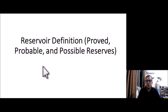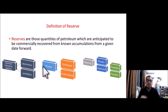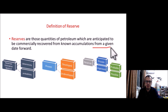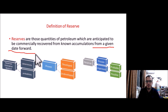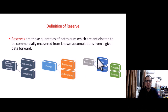Reservoir definition — what is the reservoir definition, and what are the proved, probable, and possible reserves? The international definition: reserves are those quantities of petroleum which are anticipated to be commercially recovered from a known accumulation from a given date forward. Pay attention to 'from a given date forward' — it means something that can be produced in the future, not something that you have already produced.